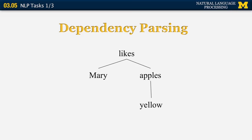The dependency tree is rooted at the predicate of the sentence. The most important word is considered to be the main verb — in this case, 'likes.' In 'Mary likes yellow apples,' there are two words that are arguments of the verb 'likes.' For there to be a liking event, there has to be somebody who does the liking and somebody who receives the liking.